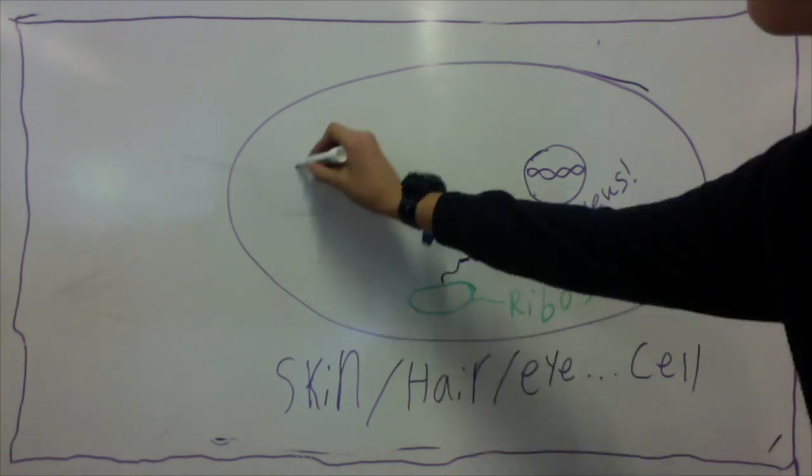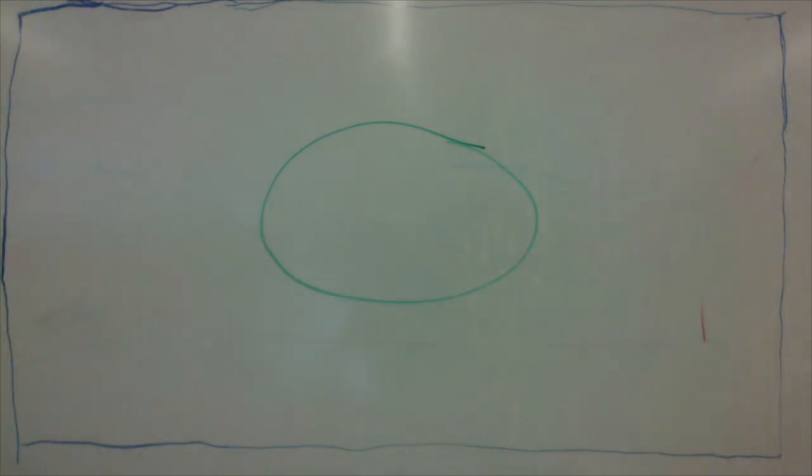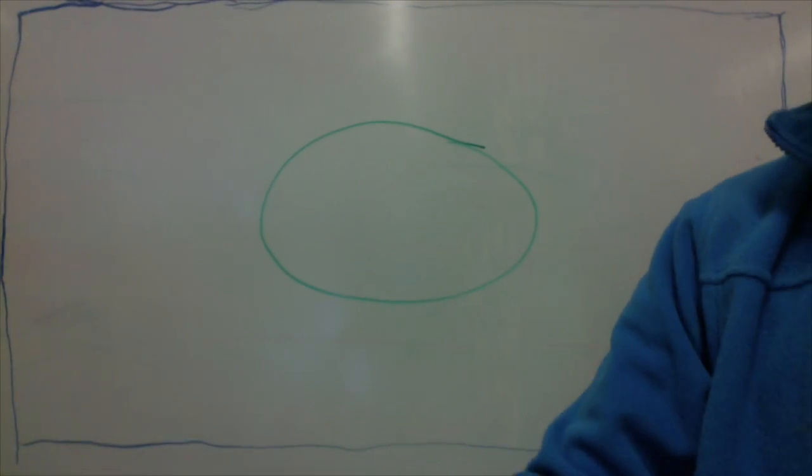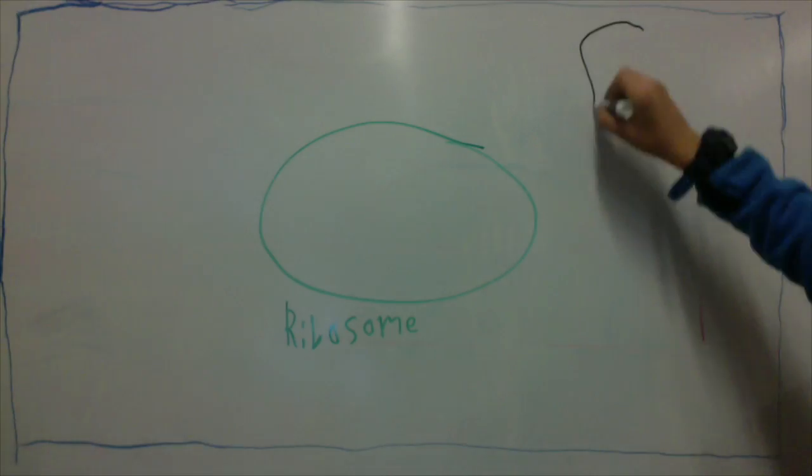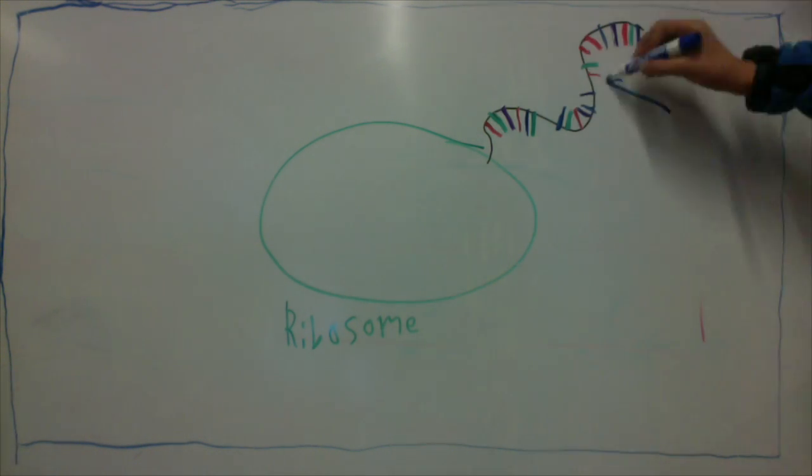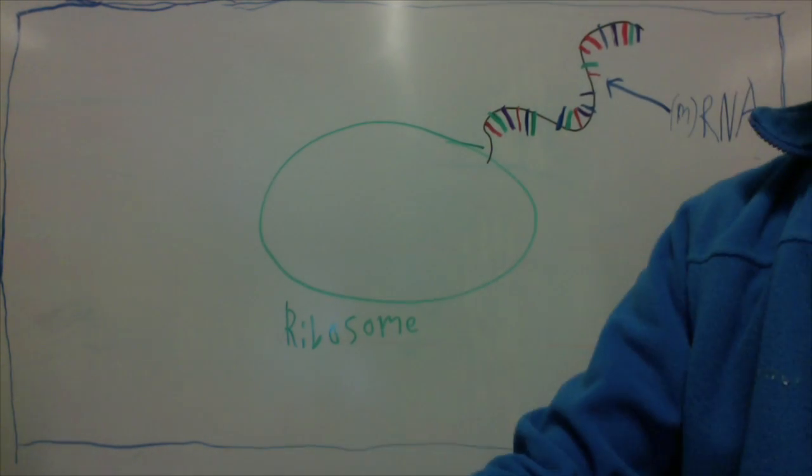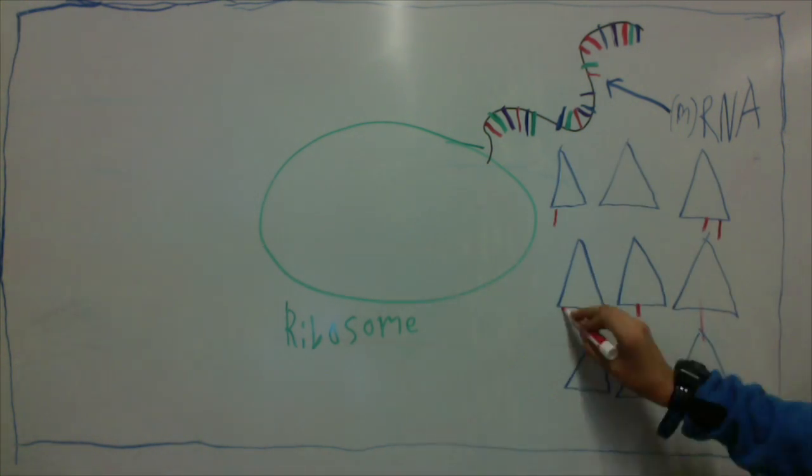The RNA will then bind onto a ribosome out in the cytoplasm. Once it's locked into the ribosome, the ribosome will now have to read the mRNA and create the corresponding string of amino acids, which will become the TYR protein.